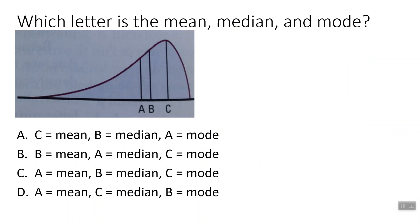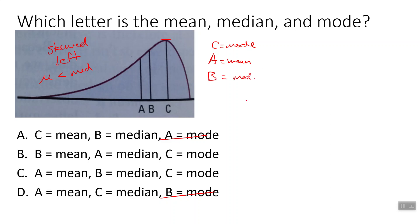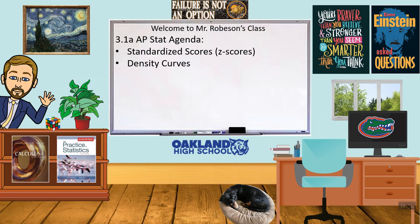Here's an example: which letter is the mean, the median, and the mode out of A, B, and C? The easiest one to find is probably the mode. The highest point is right there — if we come straight down from that, that's C. So C is the mode. It is skewed to the left, which means the mean will be less than the median. So between A and B, A must be the mean and B must be the median. The correct answer choice is C — meaning A is mean, B is median, C is mode.